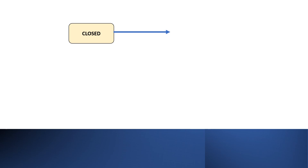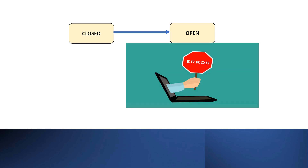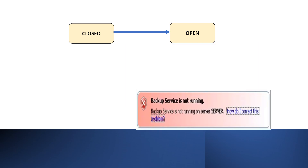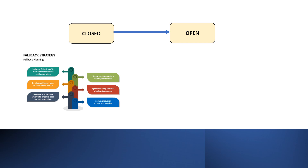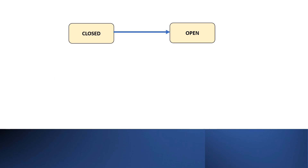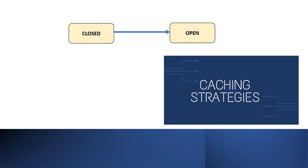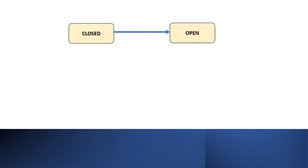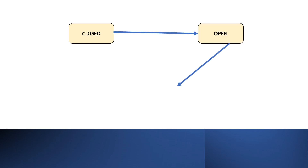However, if the booking service encounters some problem and fails to operate as expected, the circuit breaker will transition to an open state. In the open state, further calls to the booking service are blocked, since it does not make sense to continue calling a service that is known to be malfunctioning. The circuit breaker remains open for a specified duration, during which it can either throw an error message or execute a fallback logic. For instance, a potential fallback could involve caching the previous response from the booking service and utilizing the cached data.